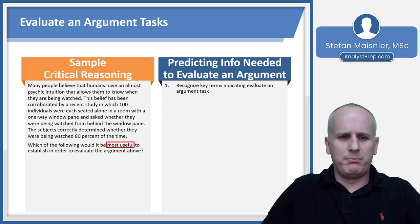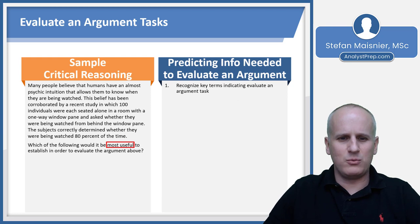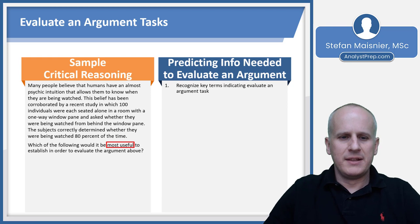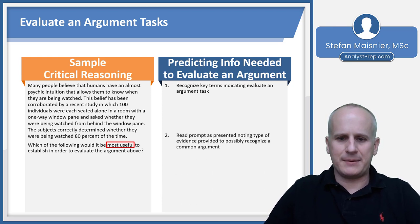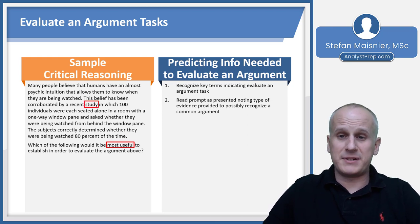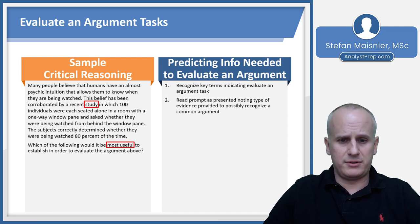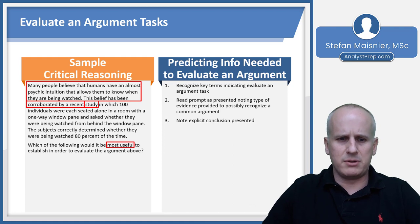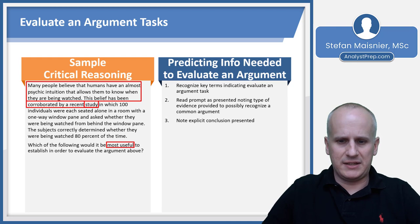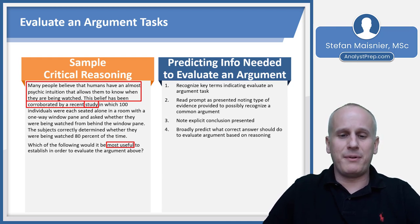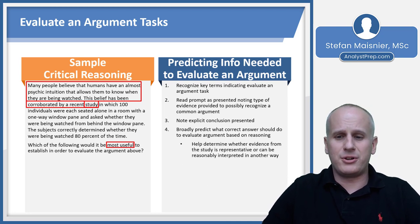We then read the paragraph prompt: 'Many people believe that humans have an almost psychic intuition that allows them to know when they are being watched. This belief has been corroborated by a recent study in which 100 individuals were each seated alone in a room with a one-way window pane and asked whether they were being watched from behind it. The subjects correctly determined whether they were being watched 80% of the time.' We've been presented information from a study, and we want to see if the evidence reasonably leads to the conclusion that humans have psychic intuition allowing them to know they're being watched. We note the explicit conclusion and make sure to articulate what that belief is.